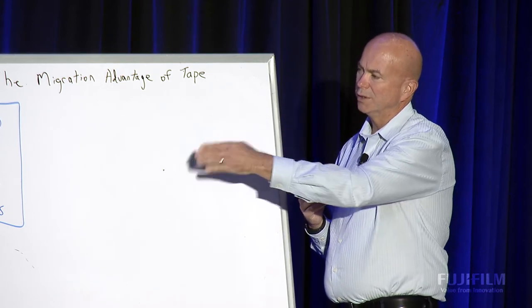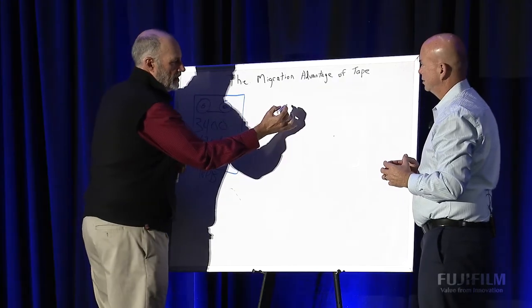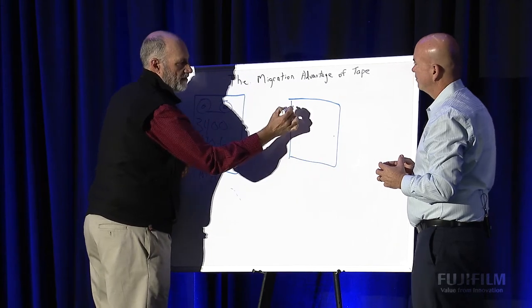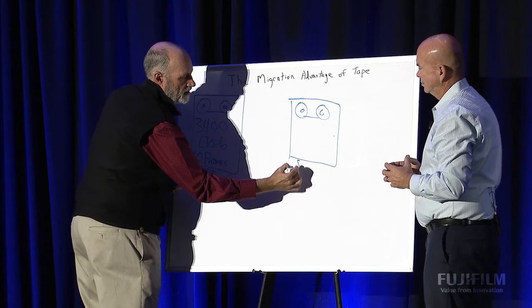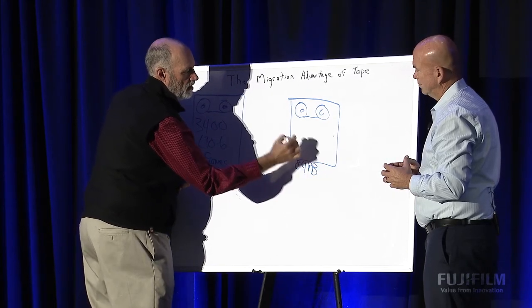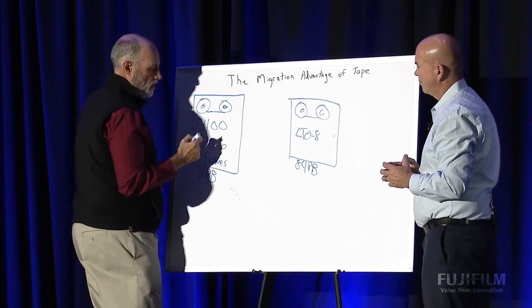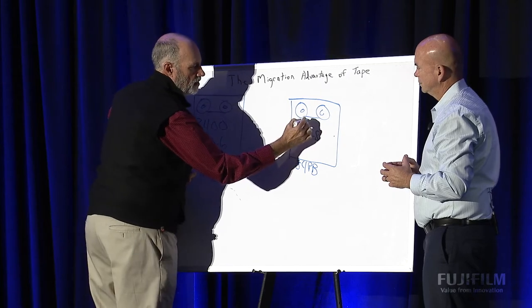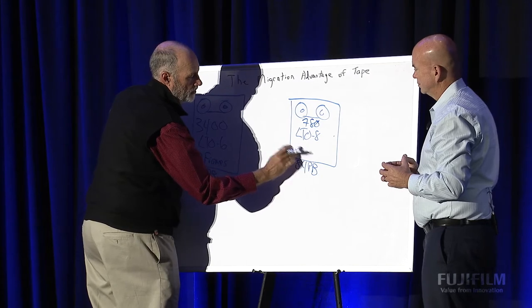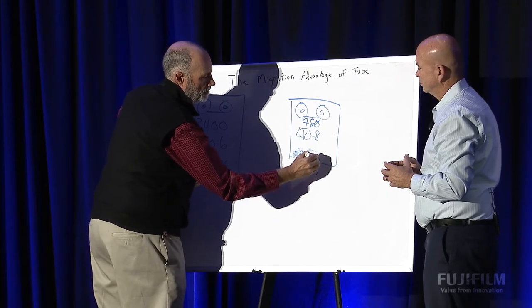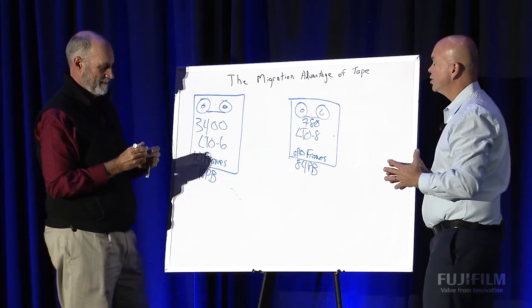Talk about what the new environment looks like after going to LTO-8. After LTO-8, it's still the 10 frame, our tape robotic system, basically. But this one goes up to 84 petabytes now with LTO-8 in there. We were able to move from 3,400 down to about 780 tapes. Now it is still 10 frames. But now with this number, I have a lot of room.